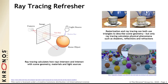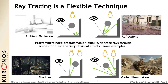You get much more detailed reflections and alternative surfaces, but you are paying a performance cost for this. Ray tracing is a flexible technique applicable to ambient occlusion, reflections, shadows, and global illumination. Those are the kinds of things you can use ray tracing for.